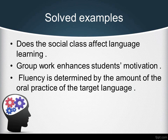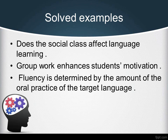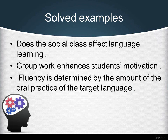Now for the third example: fluency is determined by the amount of oral practice of the target language. As you see in this example, the independent variable is not always the first one in the sentence, so you have to think and analyze each time. Fluency is what we're going to test and it depends on the amount of oral practice. Therefore, the amount of oral practice of the target language is the independent variable, whereas fluency is the dependent one.